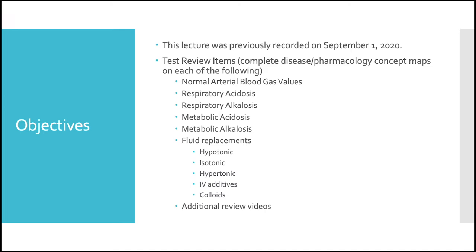Those disruptions are respiratory acidosis, respiratory alkalosis, metabolic acidosis, and metabolic alkalosis. Test questions will give you the blood gas values or the symptoms, and you're going to have to determine what your actions are based on the knowledge of those disruptions.